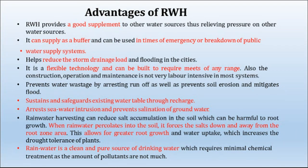In a nutshell, these are the components of rainwater harvesting systems. Moving towards the advantages: a rainwater harvesting system provides a good supplement to other water sources, thus relieving pressure on them. It can supply as a buffer and be used in times of emergency or breakdown of public water supply. It helps reduce storm water drainage load and flooding in cities — for example, in cities like Surat in Gujarat or Mumbai, incorporating these systems can reduce the load on drainage systems specifically designed for floods.